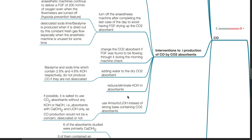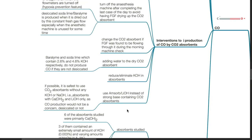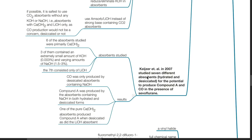Reduce or eliminate KOH in absorbents; use CO2 absorbents that do not contain strong bases. Kiesger et al. in 2007 studied 7 different absorbents — hydrated and desiccated — for the potential to produce compound A and carbon monoxide in the presence of sevoflurane. Six of the absorbents studied were primarily calcium hydroxide; 3 of them contained an extremely small amount of KOH (0.003%) and varying amounts of NaOH (1.5–3%). The seventh consisted only of lithium hydroxide. Results: carbon monoxide was only produced by desiccated absorbents containing sodium hydroxide. Compound A was produced by the absorbents containing sodium hydroxide in both hydrated and desiccated forms. One of the pure calcium hydroxide absorbents produced compound A when desiccated, as did the lithium hydroxide absorbent.